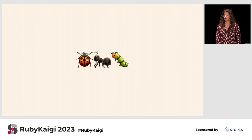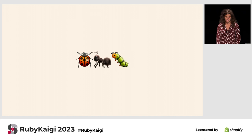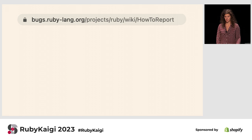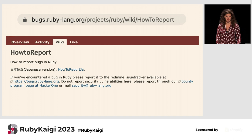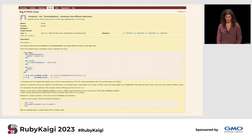We're going to tell this as a story of three bugs. We'll look at three separate bugs that have been filed in CRuby, and from each one we'll learn a little bit more about how the codebase works and how we can work in it. You can report bugs to CRuby at this URL, and there's a thorough wiki which explains how to report bugs.